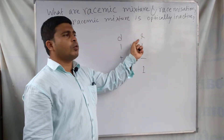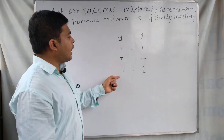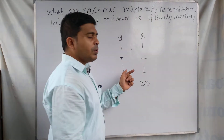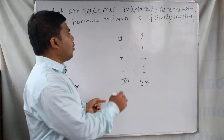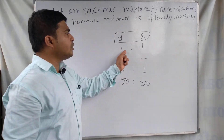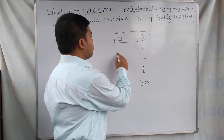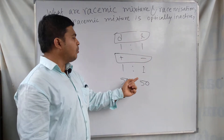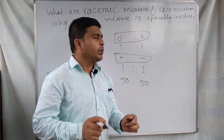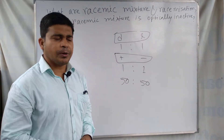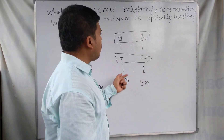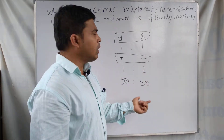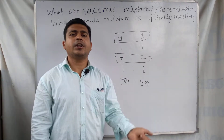When the dextrorotatory and levorotatory enantiomers are in a 1:1 ratio — that is, 50% to 50% — meaning the D and L forms are in equal amounts, this mixture is called a racemic mixture. A racemic mixture is an equimolar mixture of two enantiomers, D and L, and it is optically inactive in nature.